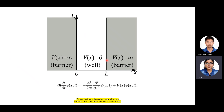First, let us discuss the simple box potential. For the box potential, there are two infinite barriers and in between the potential is zero: V(x) is infinite at x ≤ 0, V(x) is infinite at x ≥ L, and V(x) = 0 for 0 < x < L.